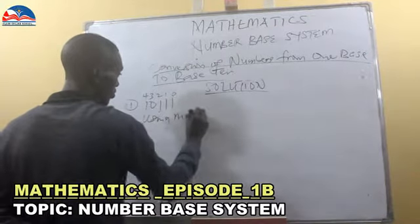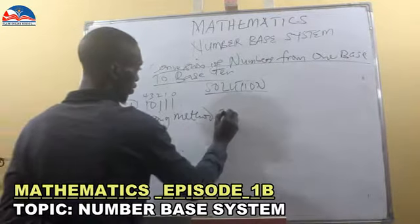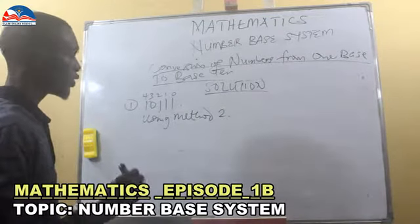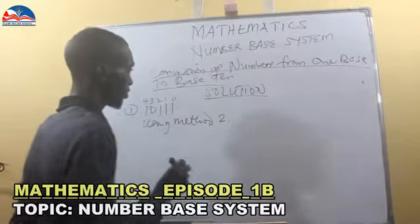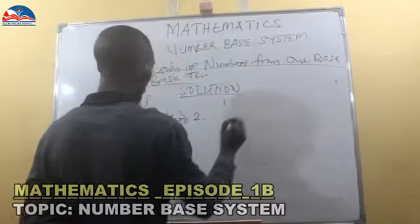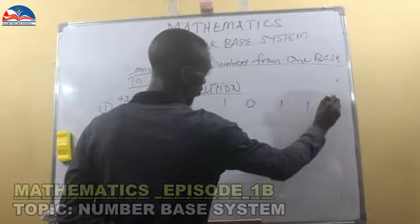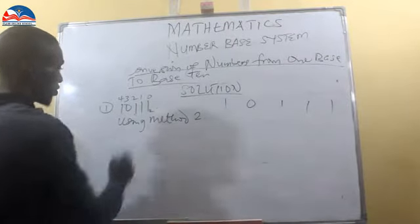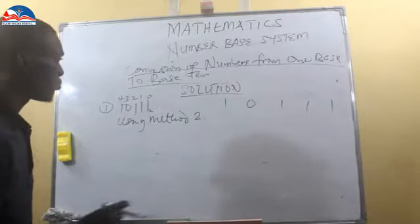Using method 2, which is known as the method of repeating multiplication. Now you have 10111 in base 2. Method of repeating multiplication simply means you are going to multiply these numbers by 2.